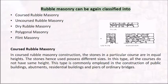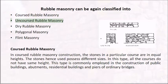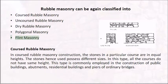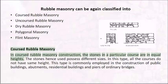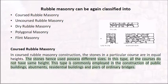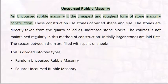Rubble masonry can again be classified into: coursed rubble masonry, uncoursed rubble masonry, dry rubble masonry, polygonal masonry, and flint masonry. In coursed rubble masonry, the stones in a particular course are of equal heights; all the courses do not have the same height. This type is commonly employed in the construction of public buildings, abutments, residential buildings, and piers of ordinary bridges.